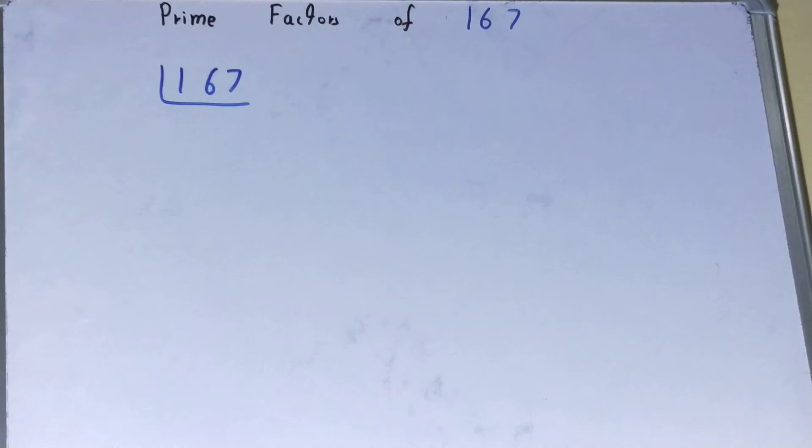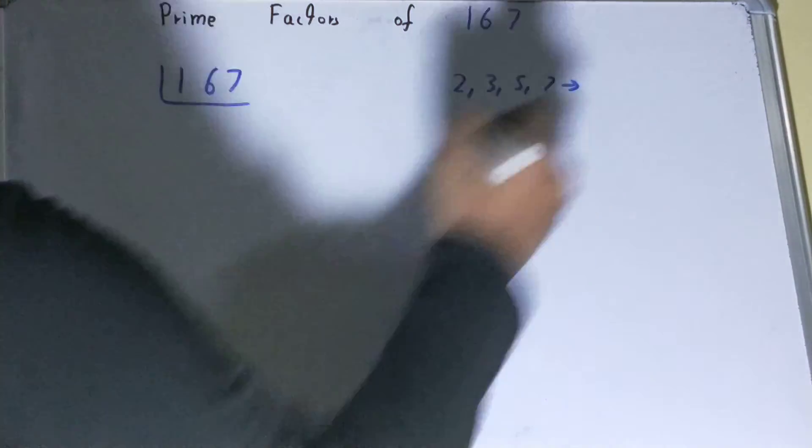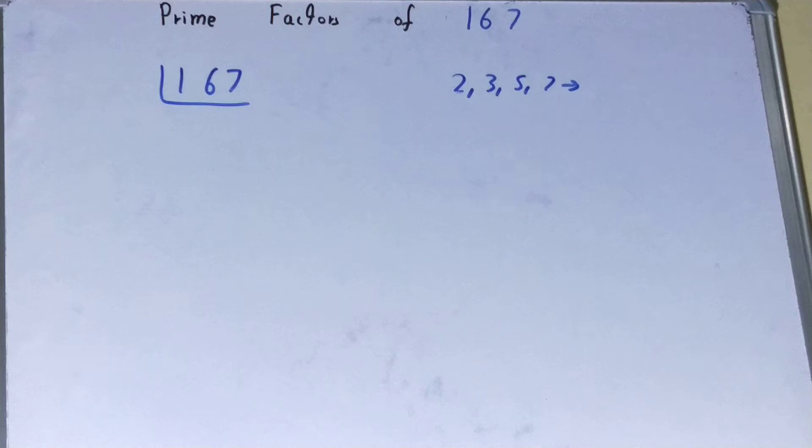Before solving this, you must know what prime numbers are. Prime numbers are numbers that are divisible by one and themselves only, like two, three, five, seven, and so on. All right, so what we'll do, we'll start.